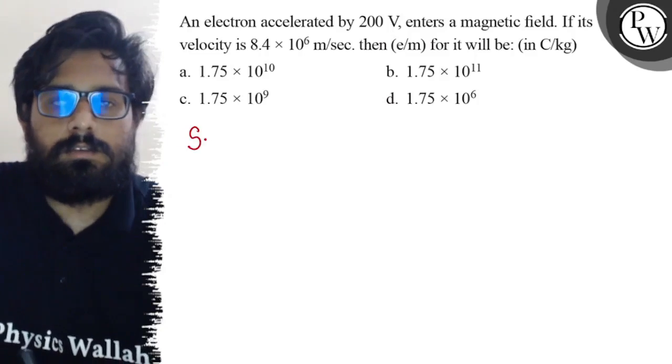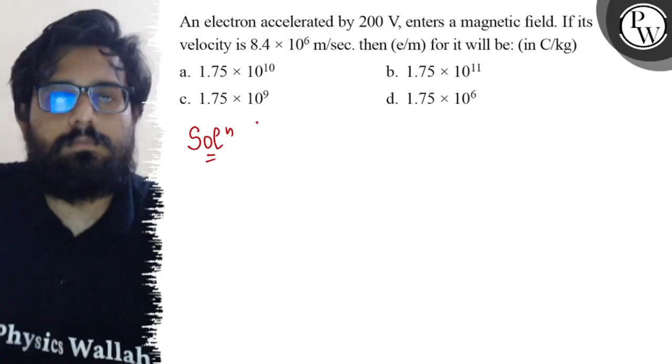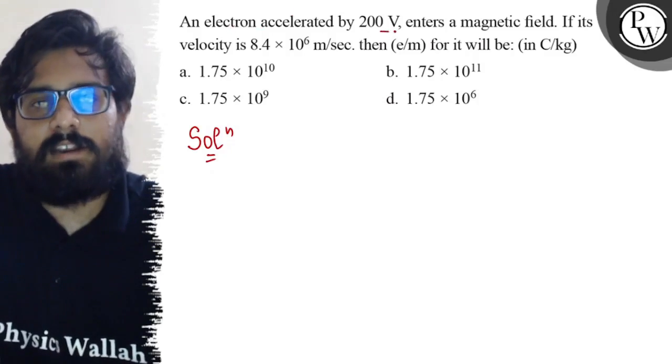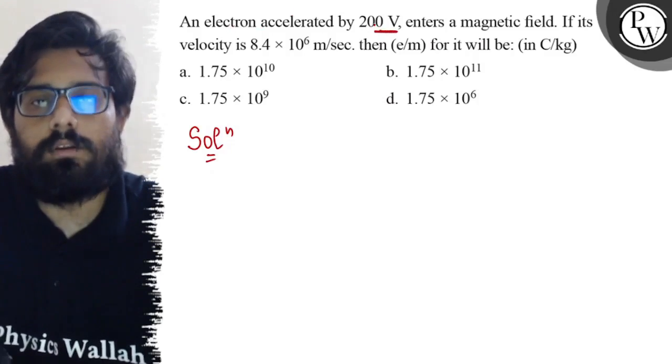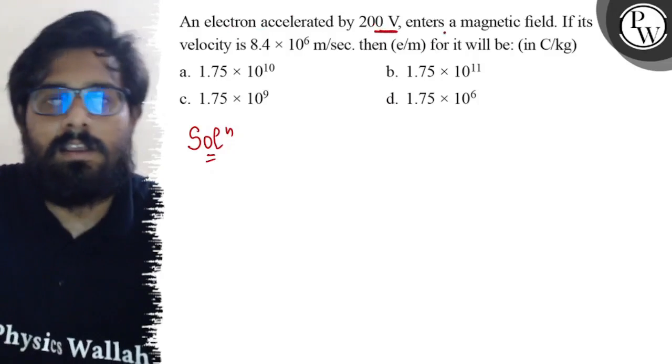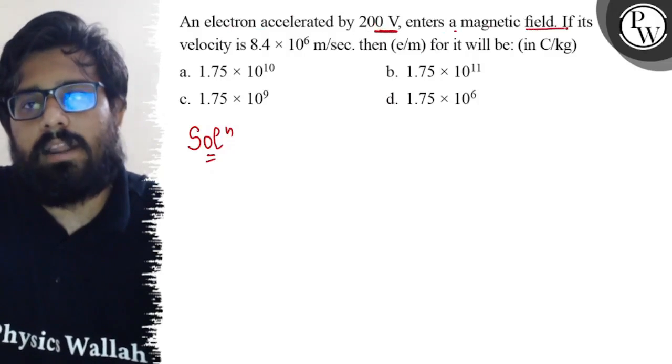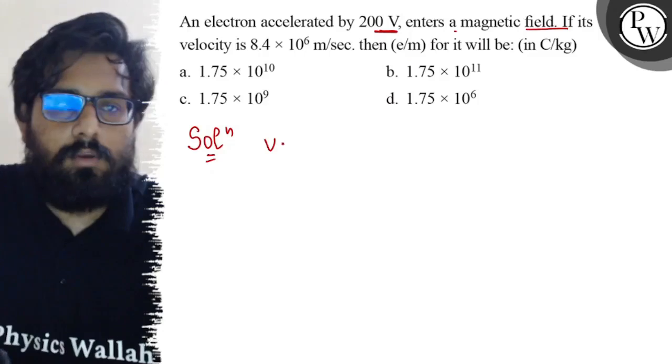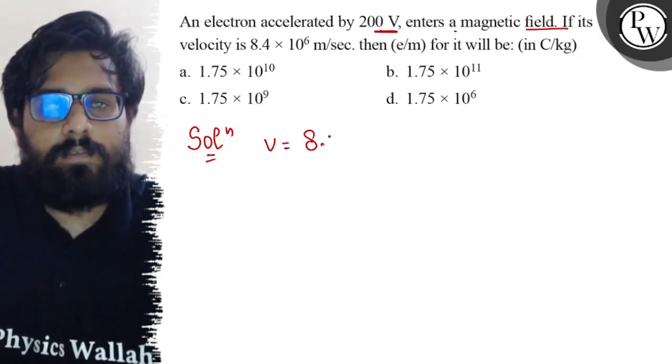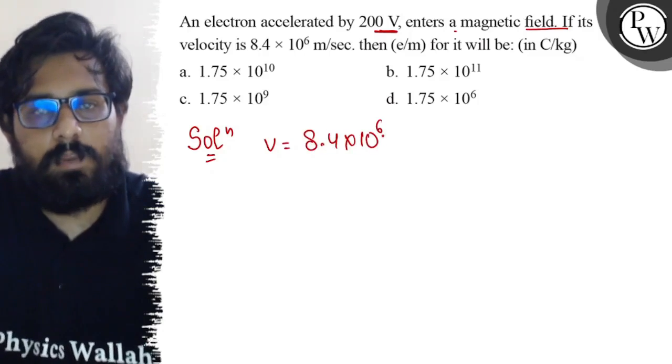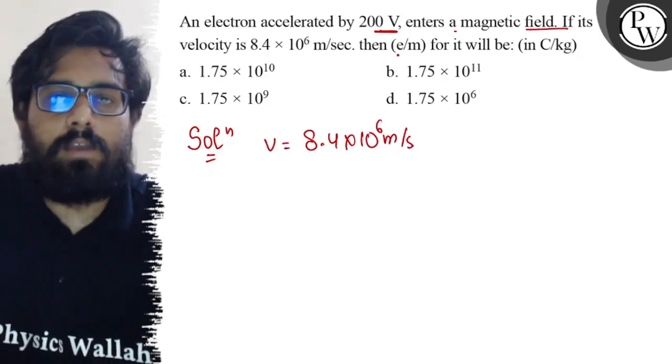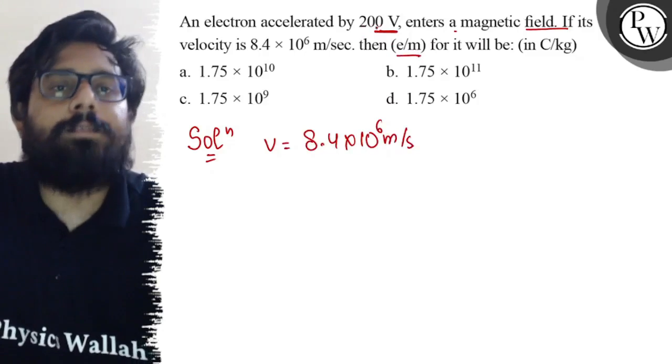So here in this question you have an electron which is accelerated by 200 volts and it enters a magnetic field. If the velocity is 8.4 × 10⁶ meters per second, you have to calculate the specific charge.